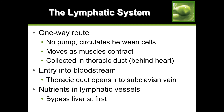The lymphatic system is a one-way route with no pump unlike the bloodstream. Lymphatics circulate between your cells, and the system moves through muscle contraction - so it's healthy to move around. At the end it's collected at the thoracic duct, which is right behind your heart. The thoracic duct opens into the subclavian vein, which then goes into the heart. Nutrients in the lymphatic vessels always bypass the liver at first.